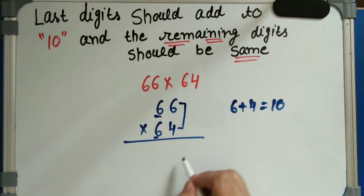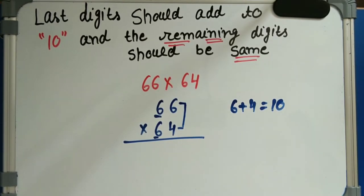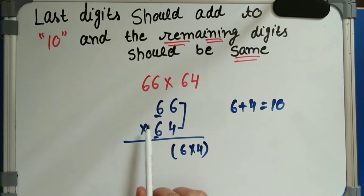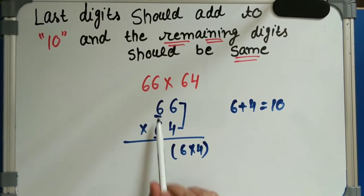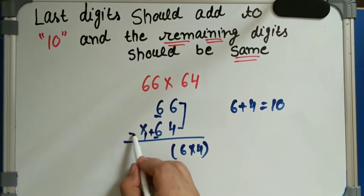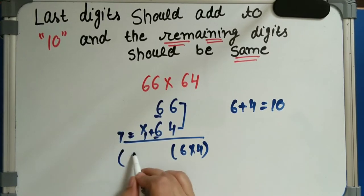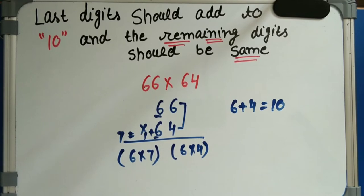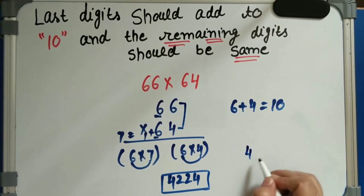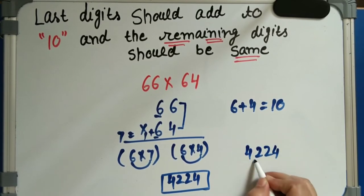First step: 6 into 4. I am showing you the complete steps; after that we can do calculations orally. Next, both remaining digits are 6, so we add 1 — that is 6 plus 1 equals 7. So we multiply 6 into 7. Now: 6 fours are 24, and 6 sevens are 42. This is our answer: 4224.